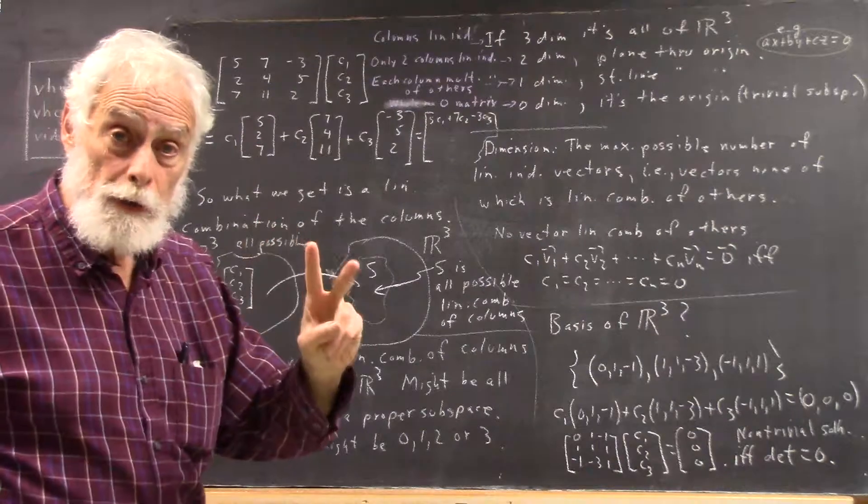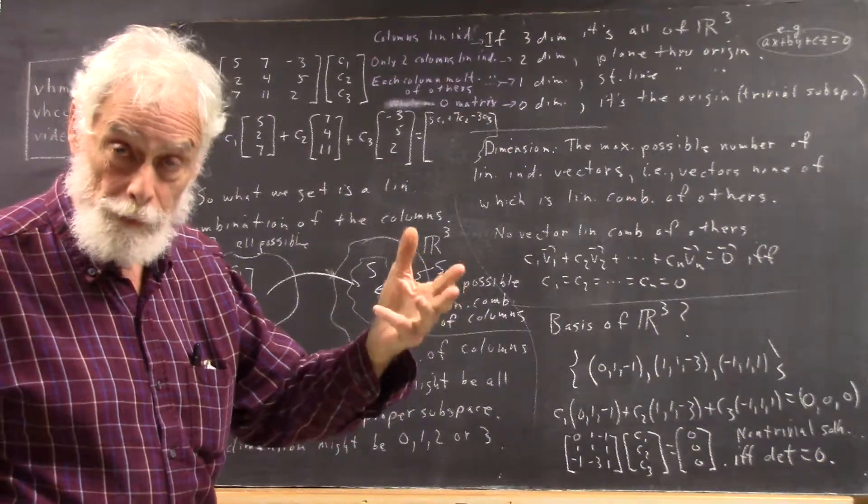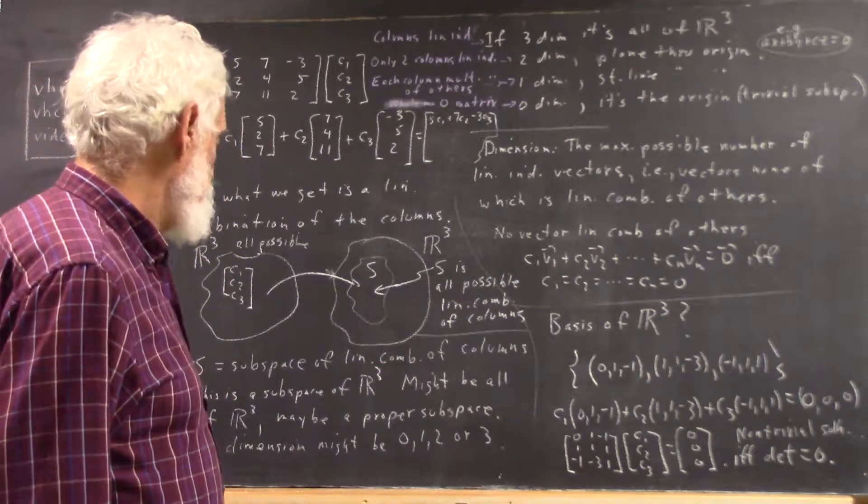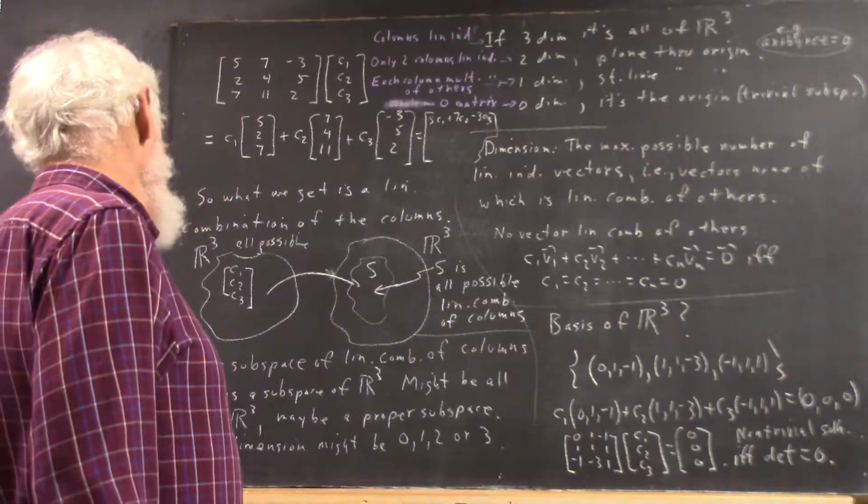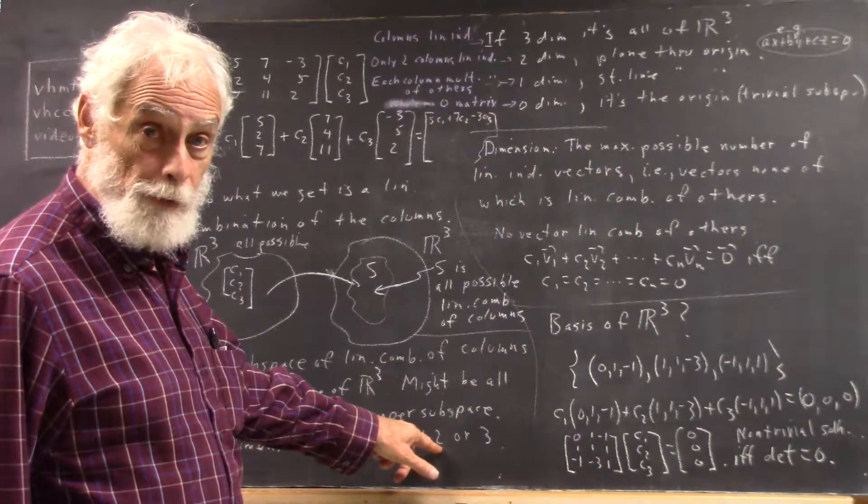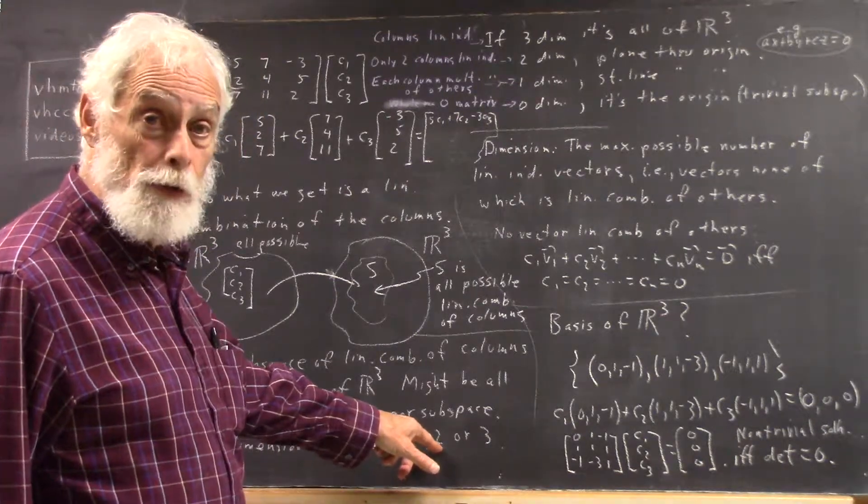If you have two linearly independent vectors but not three, so one of the vectors is linearly dependent on the other two, then you're going to get a two-dimensional subspace over here. It's going to be a plane through the origin.